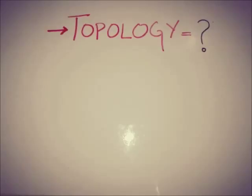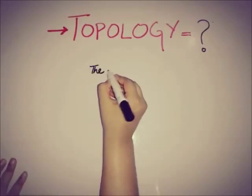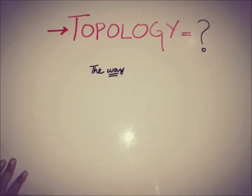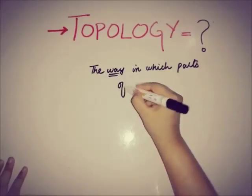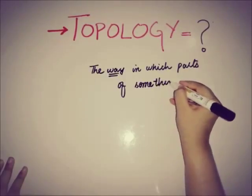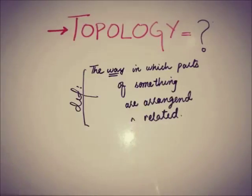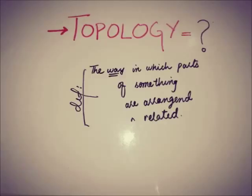The base definition of topology from a technical point of view is that topology is the name of the way in which parts of something are arranged or related. So topology tells us the geometric structure of something — how the small units of a thing are related to each other — and it is really important to view on a microscopic level to understand the relation of small units with each other.